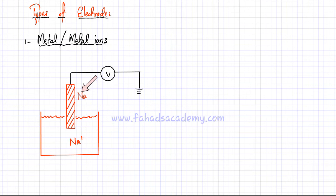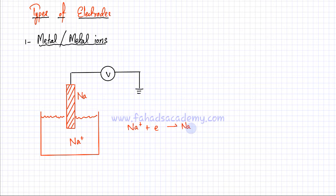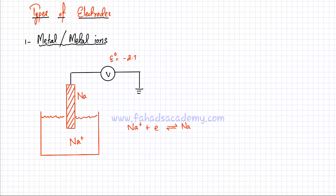So you have a sodium electrode in a solution containing sodium ions, and a reversible reaction occurs where sodium ions gain electrons to form sodium, while sodium atoms lose electrons to produce sodium ions. We can connect a wire to a ground at zero potential and measure the voltage on that electrode. Looking in the data booklet, the E-nought for this electrode comes out to be −2.71 volts, which is very negative, meaning sodium has a very high tendency to lose electrons. This is the first type of electrode: metal and metal ions.